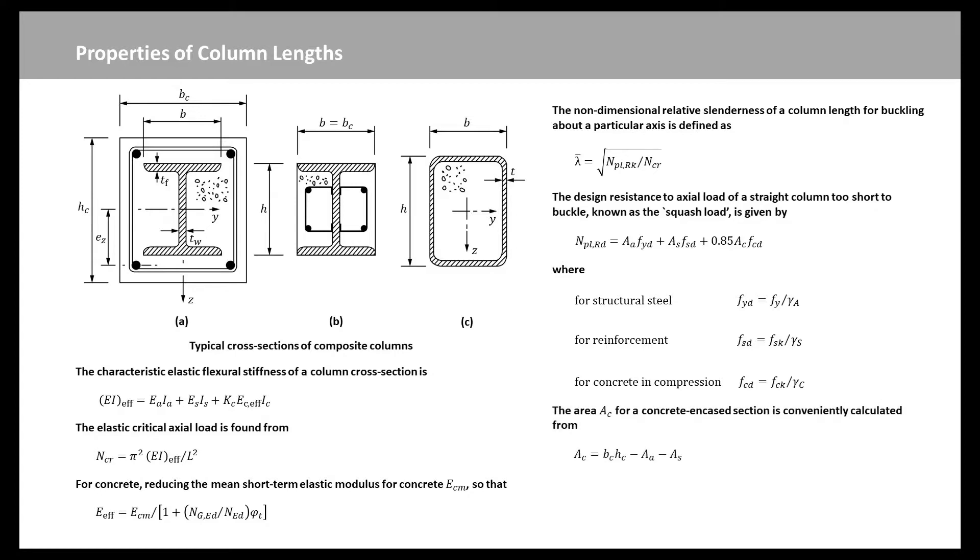The area AC for a concrete encased section is conveniently calculated from this equation. For calculating lambda bar, NPLRD is replaced by the characteristic squash load. NPLRK equation shows here, because NCR is a characteristic value.